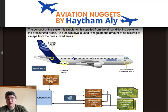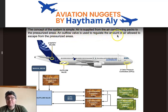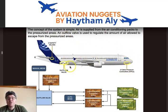The concept of the pressurization system is very simple. Air is supplied from the air conditioning packs through the mixer unit to the pressurized area. One outflow valve is used to regulate the amount of air allowed to escape from the pressurized area, which includes the cockpit, avionics bay, cabin, and cargo compartments.